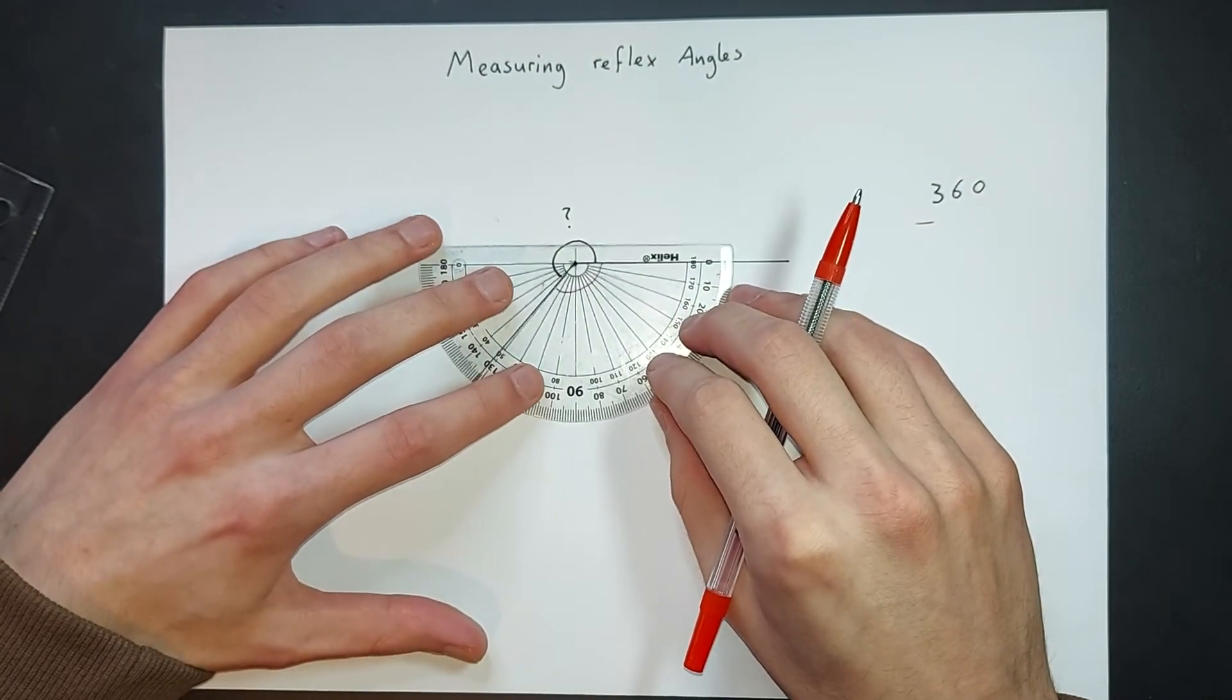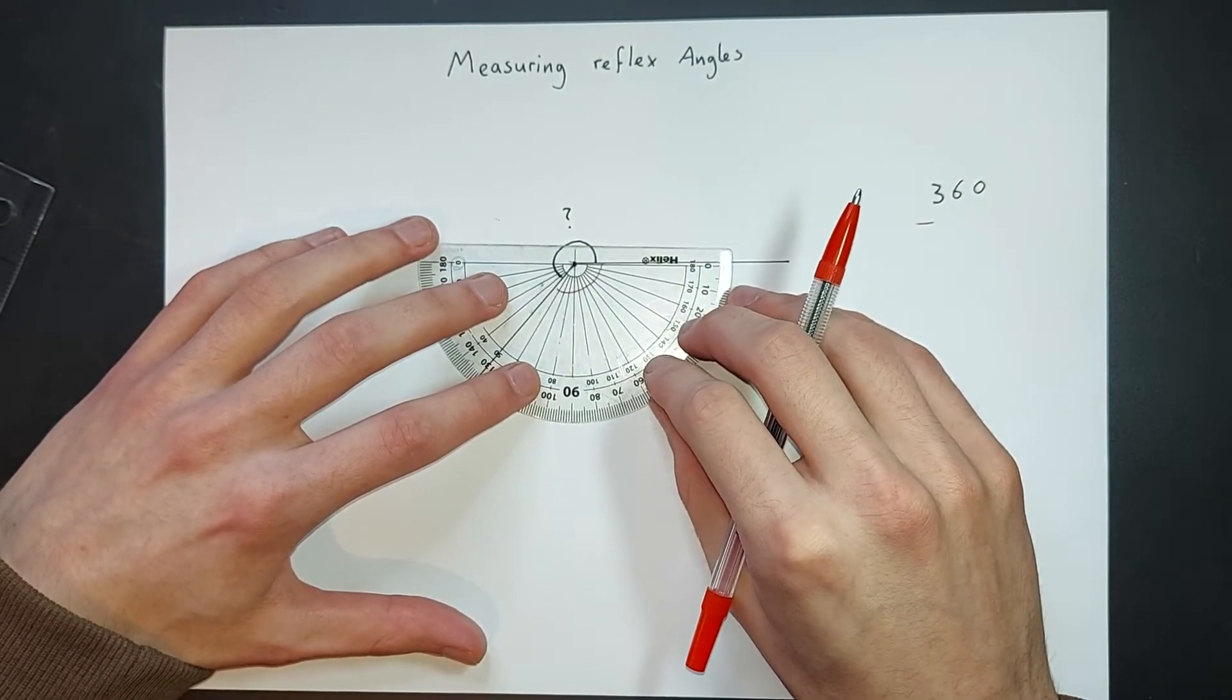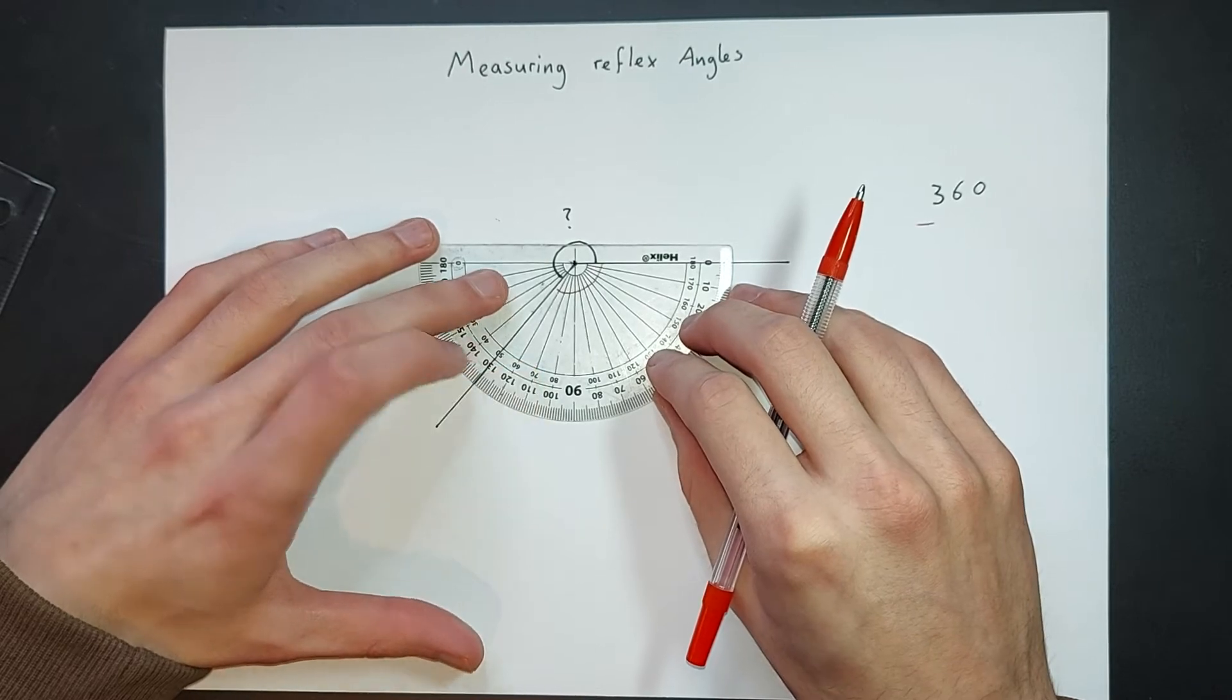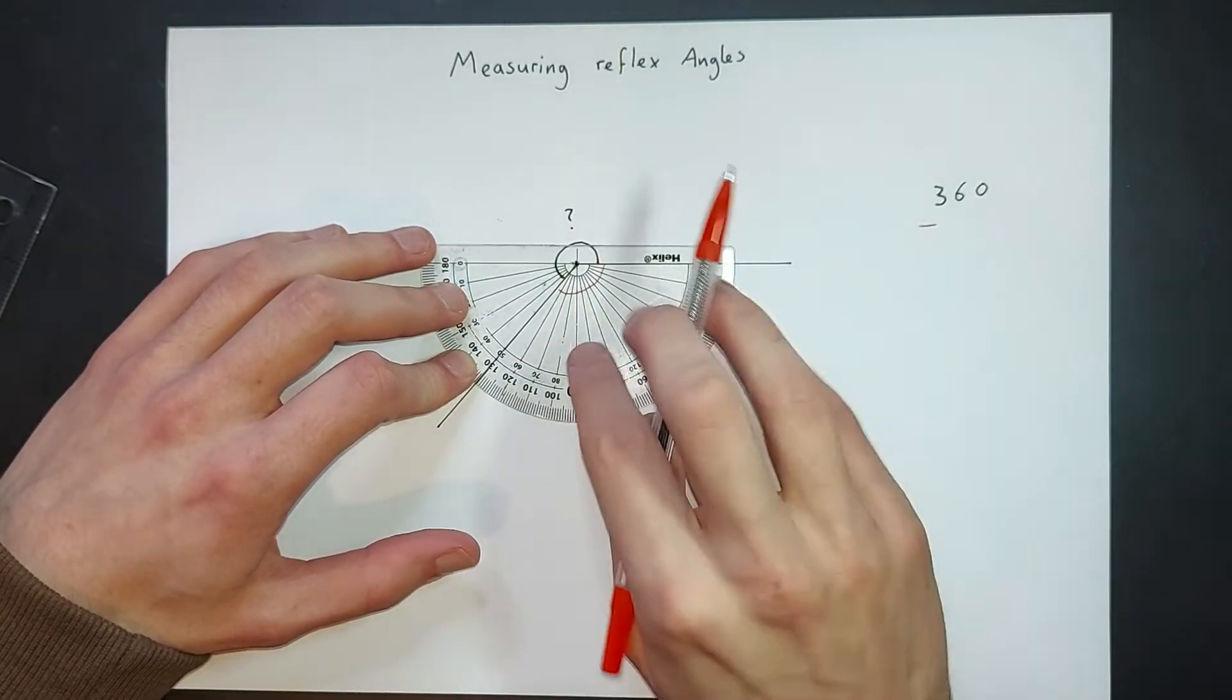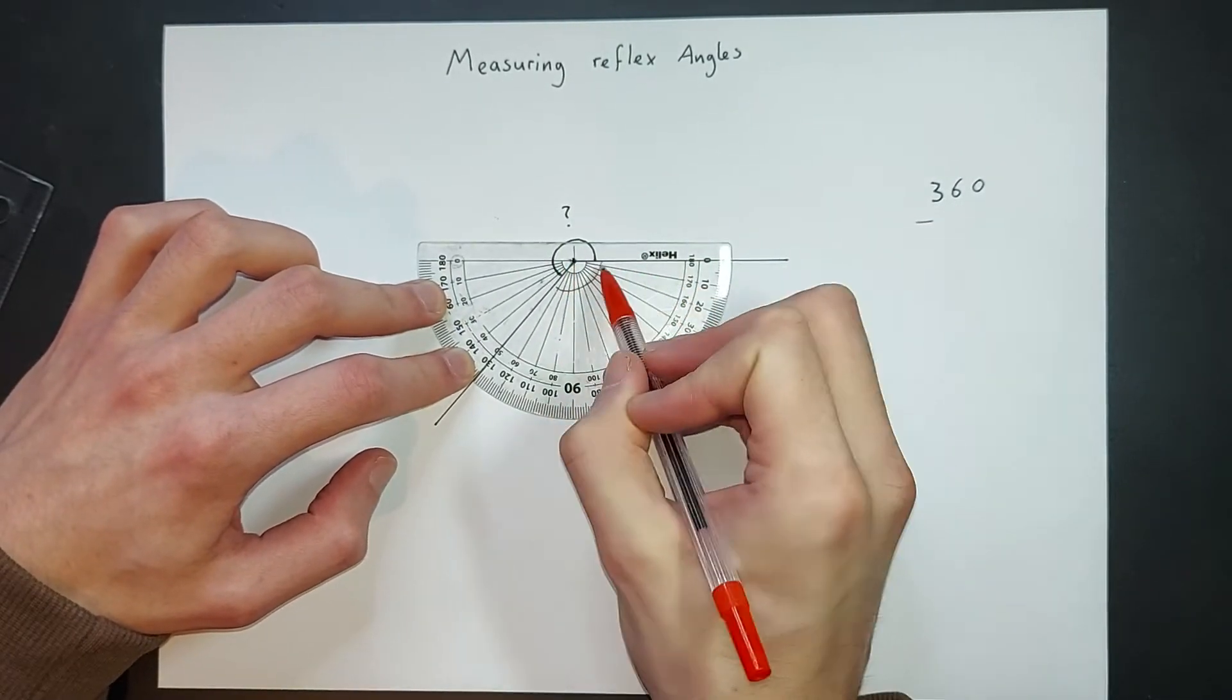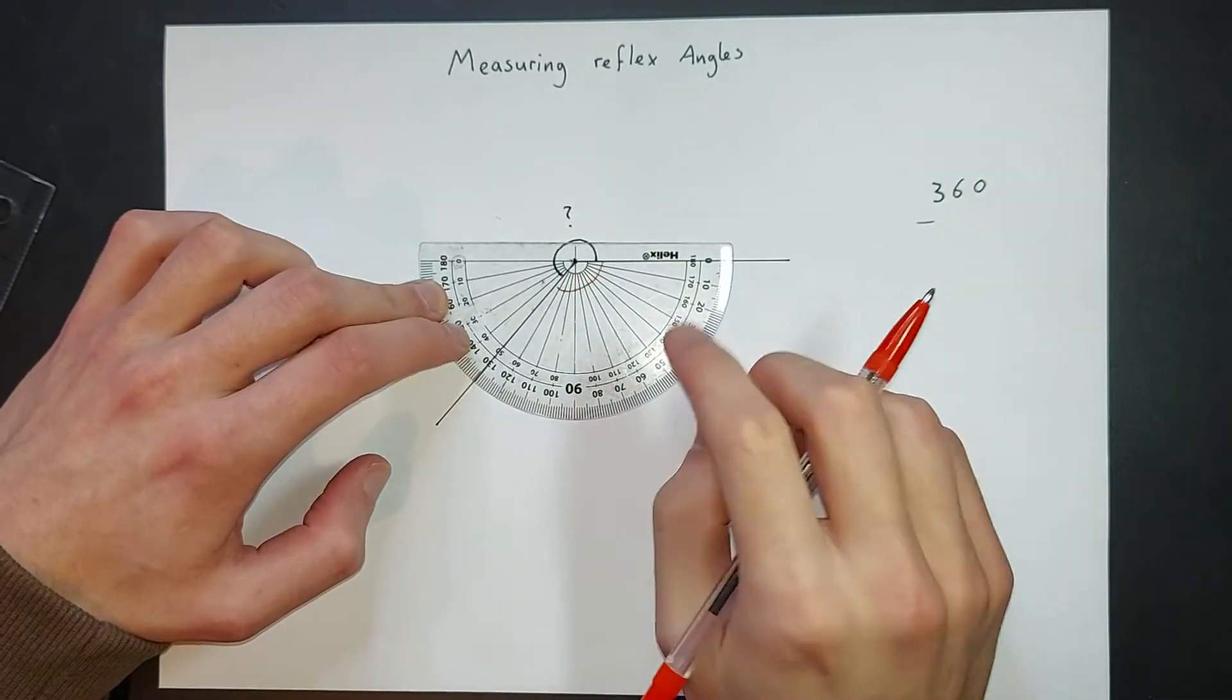So this time I've got to hold my protractor upside down, get my baseline in line with that. I've got to make sure the cross is in line with the vertex, this baseline is in line with this line, that's good.